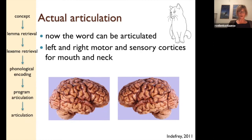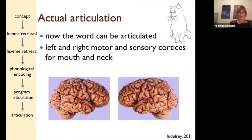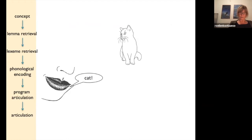Those of you familiar with aphasiological theories about word retrieval will recognize that impairment at the articulatory level gives dysarthria; at the programming level, apraxia of speech; further back, conduction aphasia; probably anomia and probably Wernicke's aphasia — though we're not sure about that. Concept-level impairment gives semantic dementia. But that's aside — now you can say the word 'cat.'